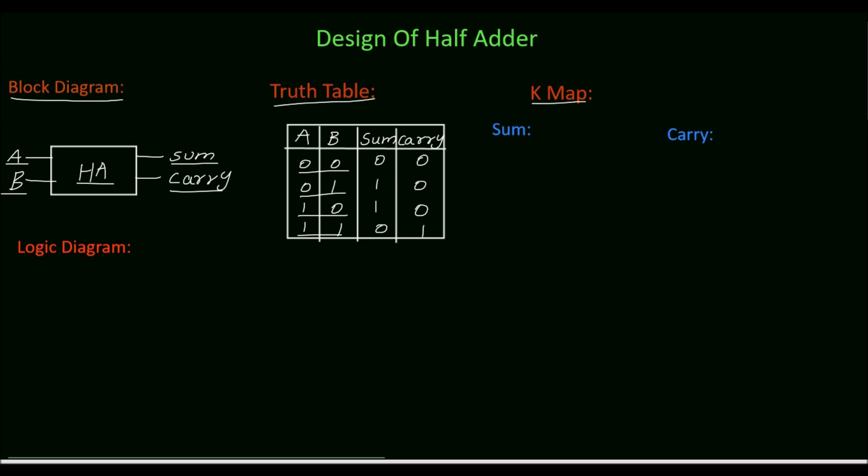Next we will draw the K-map. First we will draw the K-map for sum. For n inputs we need 2 power n cells. For 2 inputs we need 2 power of 2 which is 4 cells. Draw the K-map with 4 cells.